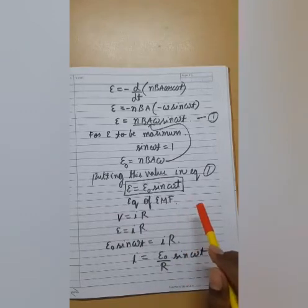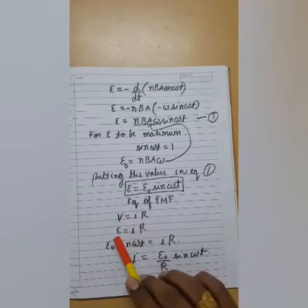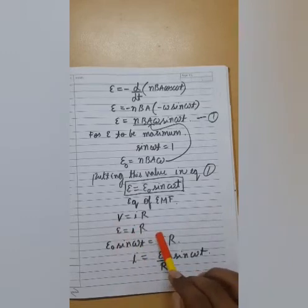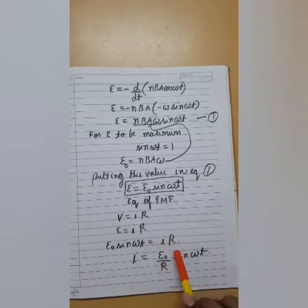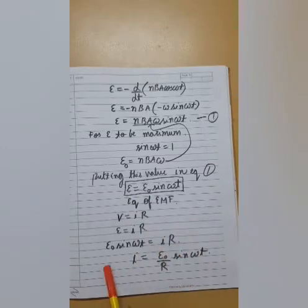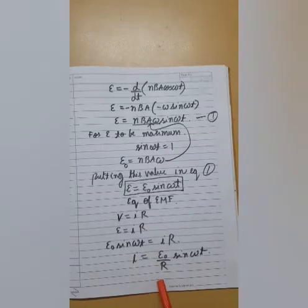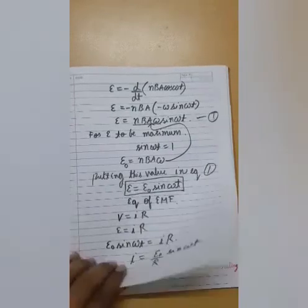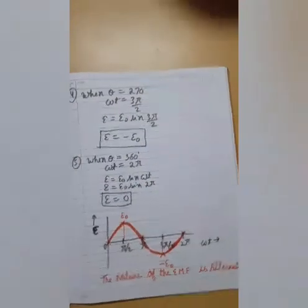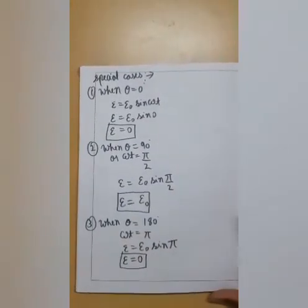Further, if you want, you can even find the equation of current also. Because we know that v is equal to i R. So in place of v, if we write e, e is equal to i R. So if I write i R in place of e, and take R down, then i is equal to e knot by R sin omega t. And what is e knot by R? This would become i knot. Hence, our equation would be i is equal to i knot sin omega t.